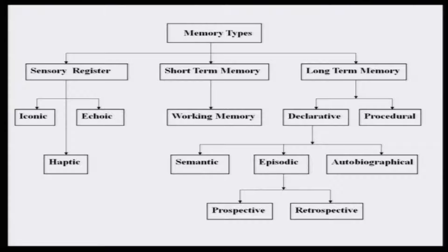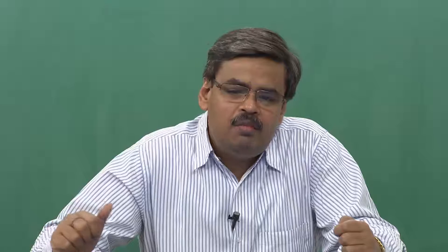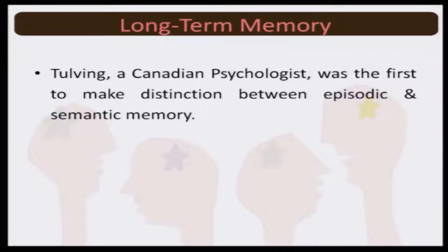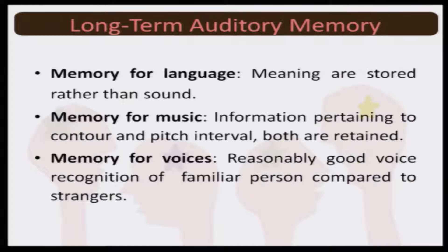We will start with episodic memory and then move towards different other types of long-term memory. Canadian psychologist Tulving was the first to make the distinction between episodic memory and semantic memory. If you look at the way information is stored and recollected, you will find very interesting things about human beings.